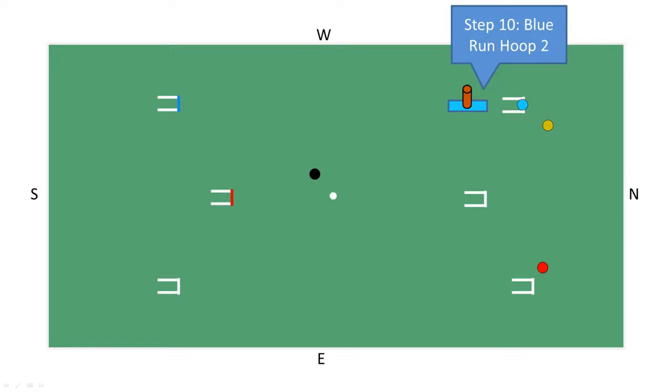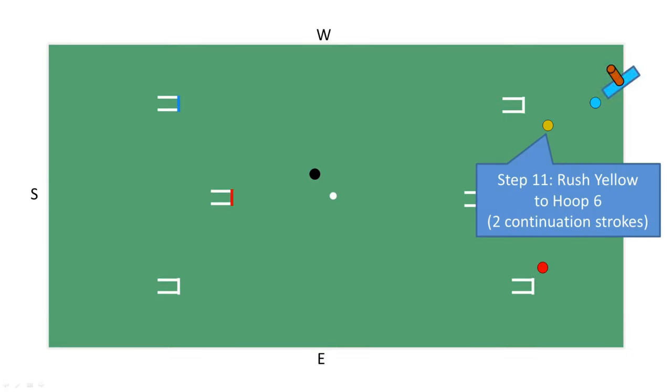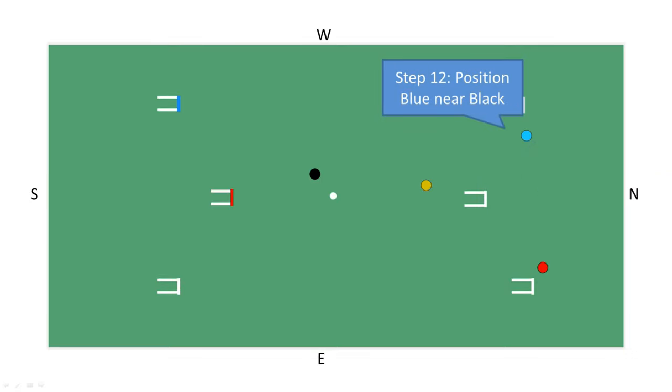Again, the new player might be tempted to simply tap yellow again and then go over and score hoop 3. However, there is then nothing to use at later hoops. Blue first pushes yellow to a position between the centre post and hoop 6 for later use.